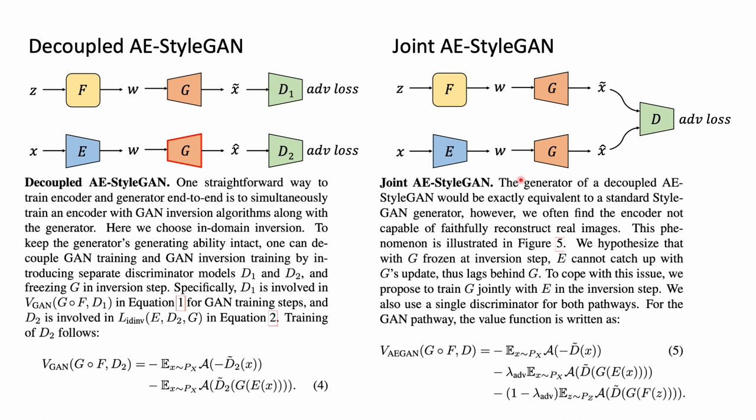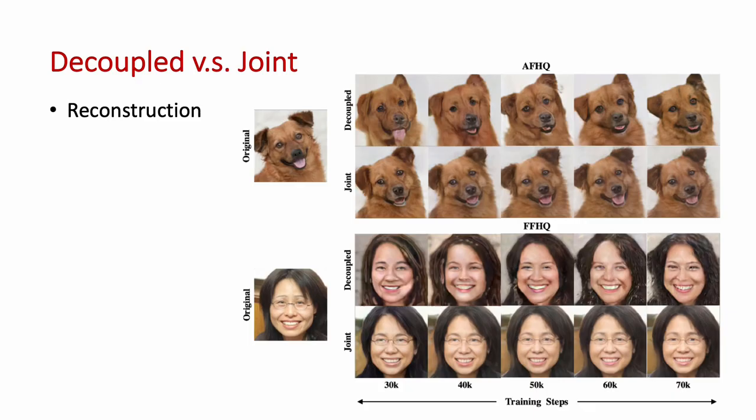We also consider a joint AE StyleGAN model, where we only have a single shared discriminator that considers both fake images sampled from the generator and reconstructed real images as fake images. Also, the generator is updated during the autoencoder training pathway.